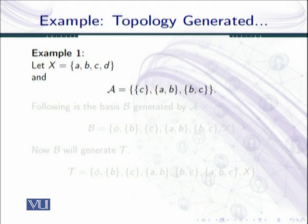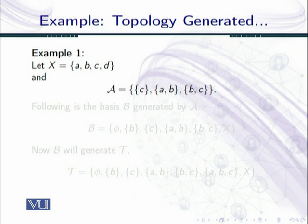Our first example: we have a four-point set X = {a, b, c, d} and we have the class A consisting of subsets {a,b} and {b,c}. One can clearly see that A is not a basis for some topology on X, because the intersection of {a,b} and {b,c} is {b}, but {b} is not an element of this class A.